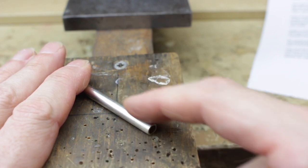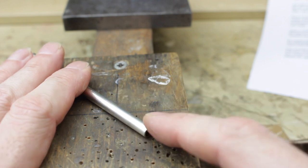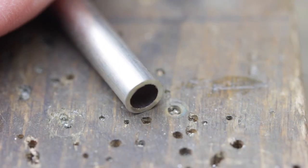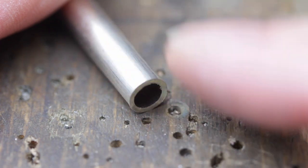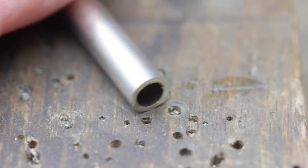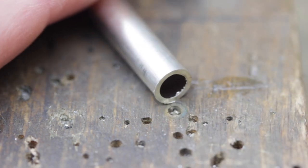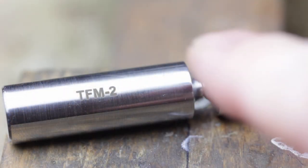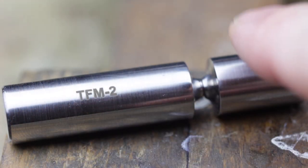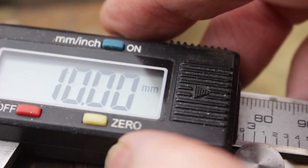This is sterling silver seamless tubing with an outside diameter of 6 millimeters, inside diameter of 4.6, and a 0.7 wall thickness. So the 4.6 millimeter inside diameter is perfect for use with the medium sized mandrel. And I'm going to cut this into 10 millimeter lengths.